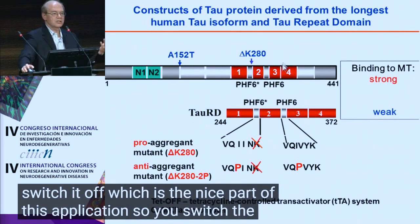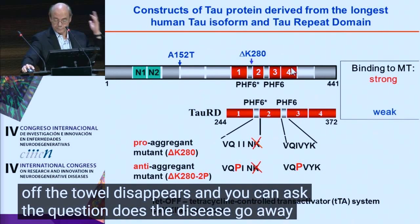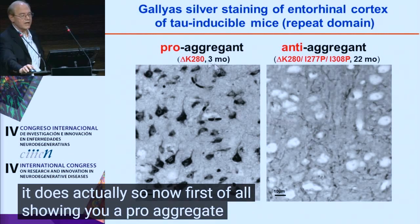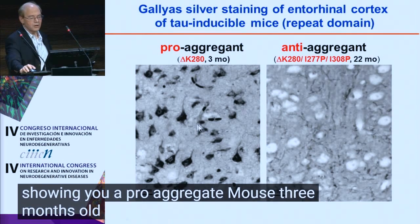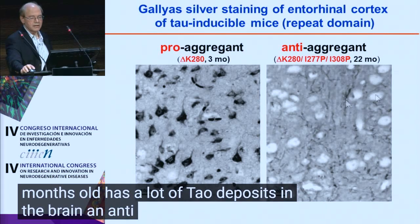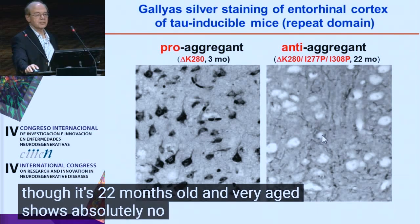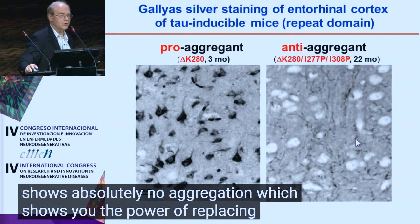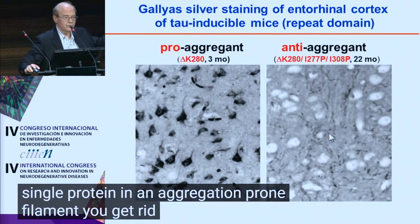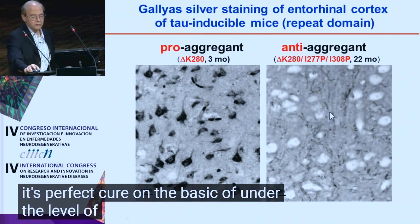When you switch the tau off, the tau disappears, and you can ask whether the disease goes away — and it does. A pro-aggregant mouse at three months old already has a lot of tau deposits in the brain. An anti-aggregant mouse, even at 22 months old, shows absolutely no aggregation, which demonstrates the power of replacing a single proline in an aggregation-prone sequence. So it's essentially a perfect cure at the level of molecular biology.